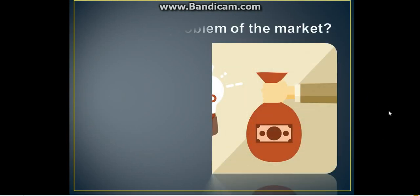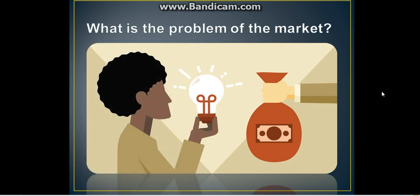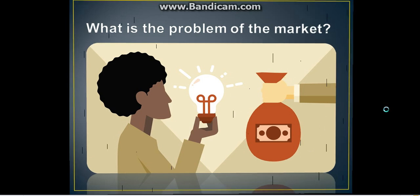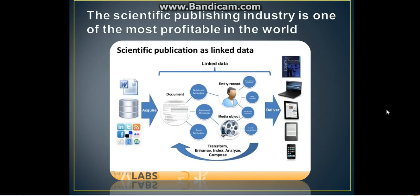So what are the problems of the publication? The scientific publishing industry is one of the most profitable in the world. The top five publishers account for 50% to 70% of all publications, and their profit margins have been reported to exceed those of companies such as Google, Amazon, or Apple. In 2015, the global market for scientific, technical, and medical — what we call STM — publishing was estimated at $25 billion.